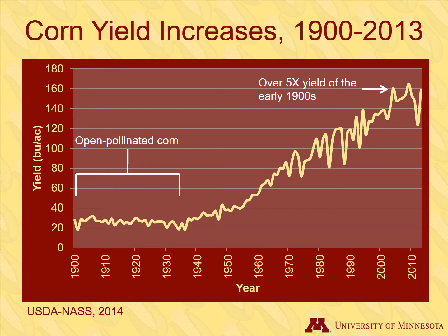How did hybrids affect yield over time? Yields start to go up immediately after hybrids were introduced. In just one decade, by the end of the 1940s, farmers were producing corn yields never seen before, and yields just went up from there. Nowadays, new hybrids are constantly being developed and replacing older ones. Yield increases are continuing today, with yields that are over five times what they were in the early 1900s.